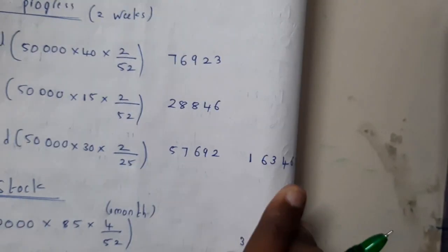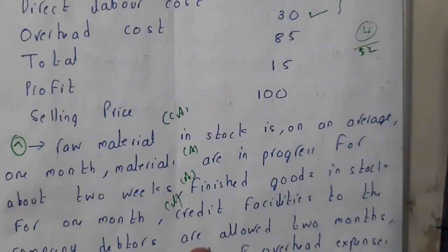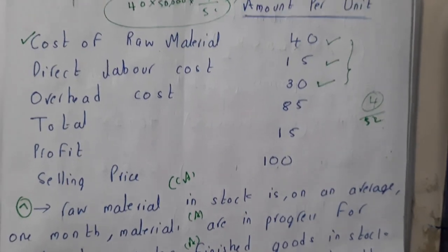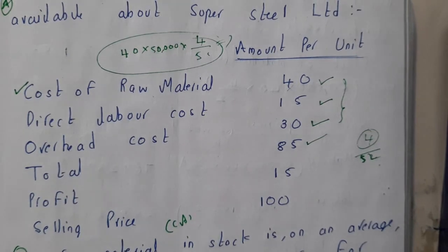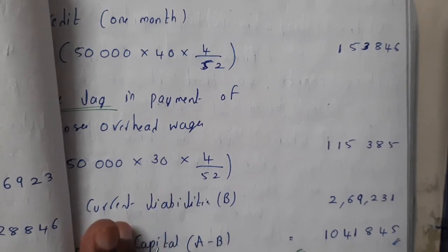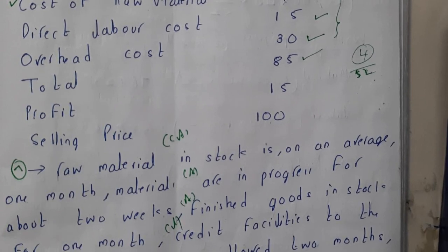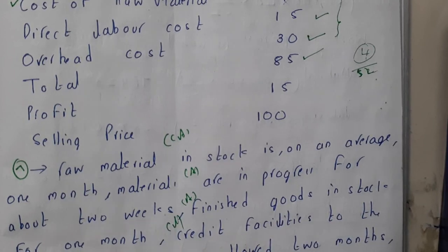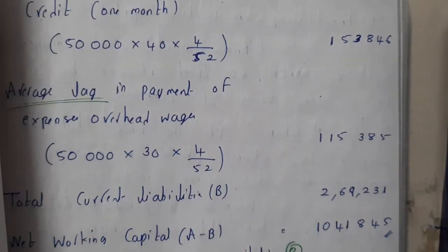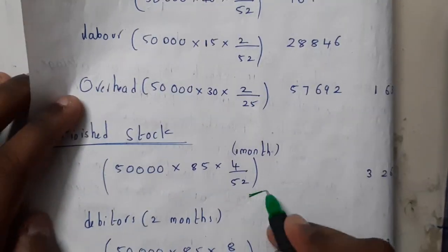Next is finished goods stock. Once goods are finished, the total cost comes into play — that is 85 rupees per unit. Finished goods in stock for one month: 85 into 50,000 into 4 by 52. One month equals four weeks, so we use 4 by 52 in the formula.